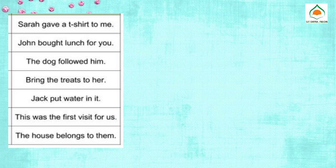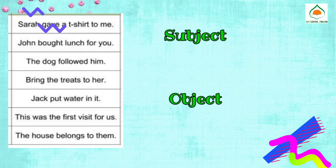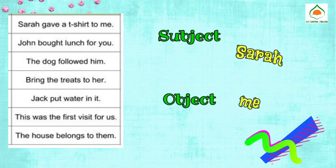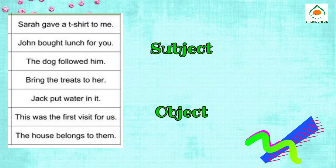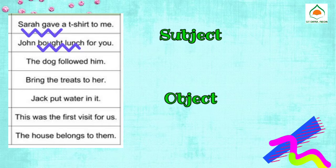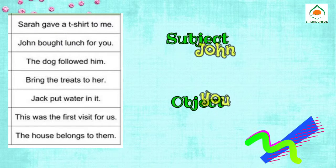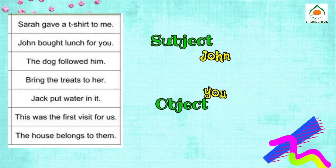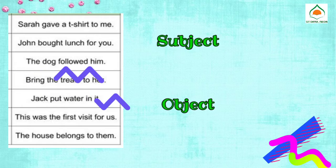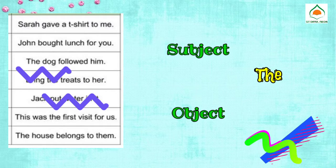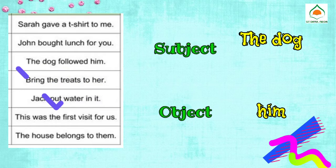Here are examples of subject pronouns and object pronouns in sentences. One: Sarah gave a t-shirt to me — the subject is Sarah, the object is me. Two: John bought lunch for you — the subject is John, the object is you. Three: The dog followed him — the subject is the dog, the object is him.